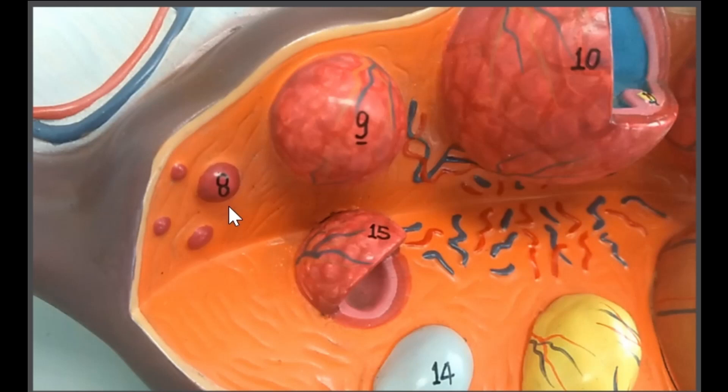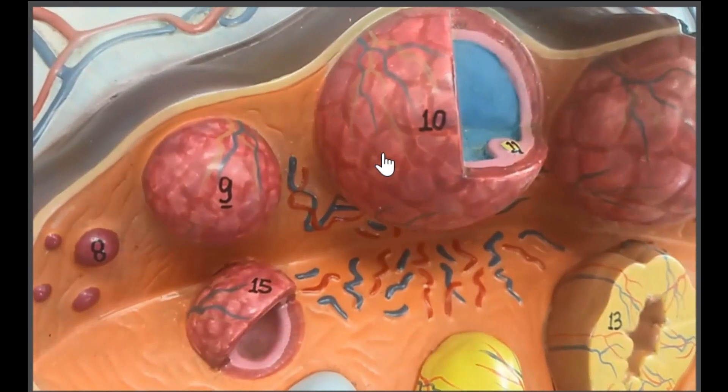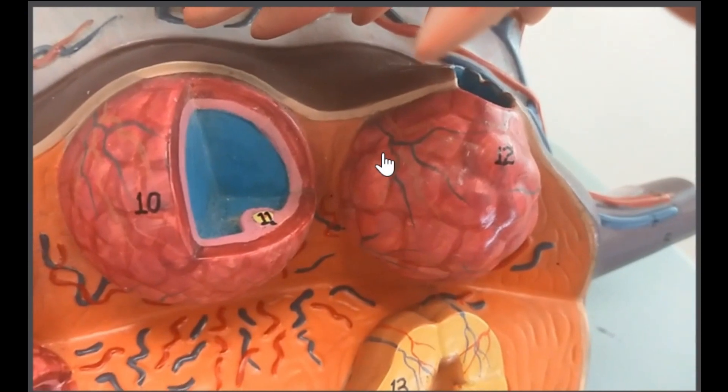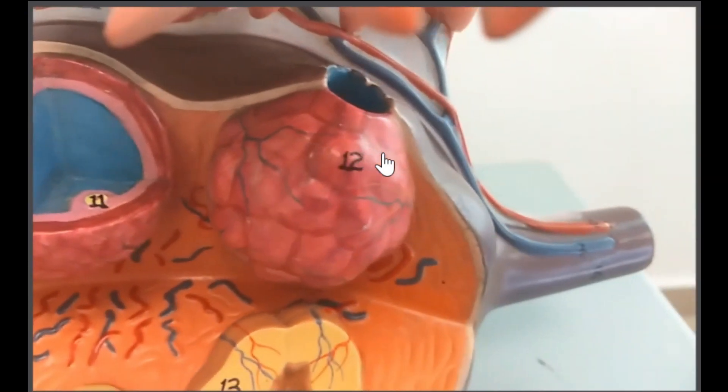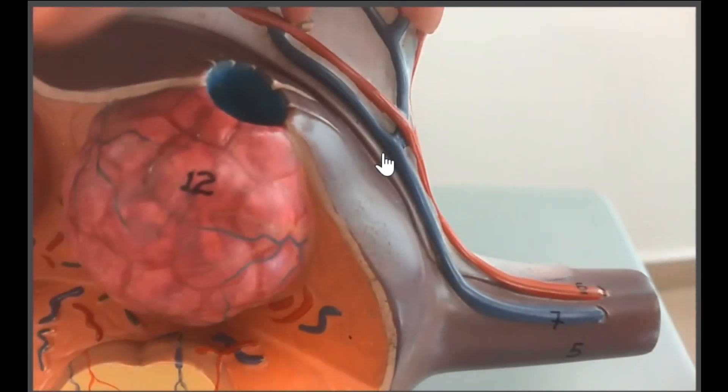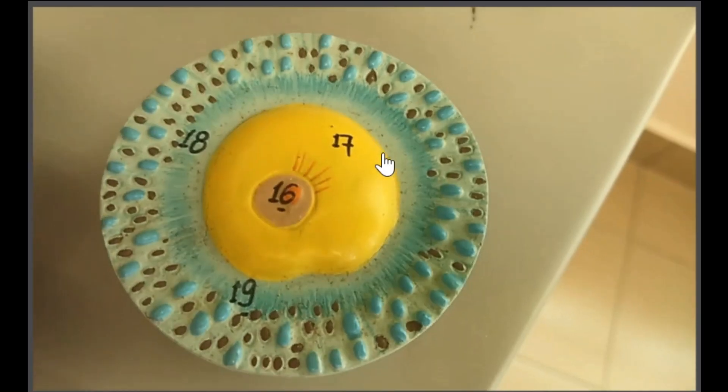The primary follicle will grow bigger. The primary oocyte inside the primary follicle will also divide into a secondary oocyte and polar body. You can see that the follicle is growing bigger and growing to the edge of the ovary. During ovulation, the secondary oocyte will be released into the oviduct and the adjacent wall of the ovary will be ruptured.